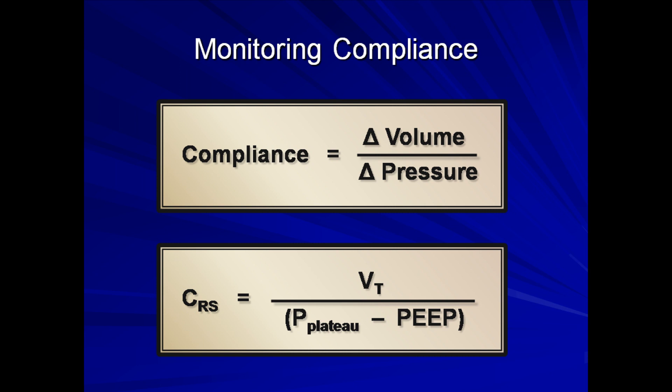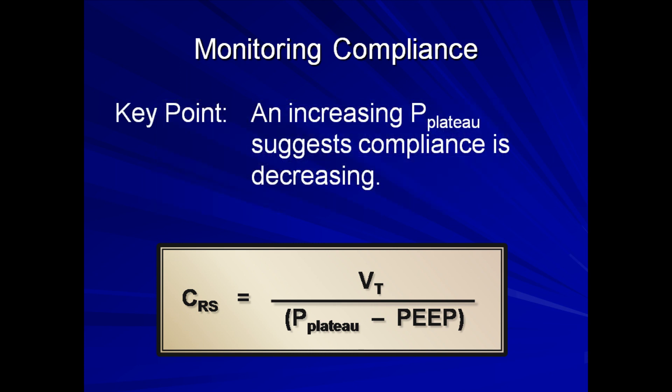Note that the PEEP here refers to total PEEP — the sum of the PEEP intentionally applied by the ventilator and something known as auto-PEEP. Auto-PEEP is PEEP that develops unintentionally due to a variety of pathologic processes and will be discussed in a future lecture. The key takeaway is that an increasing plateau pressure suggests that compliance is decreasing.